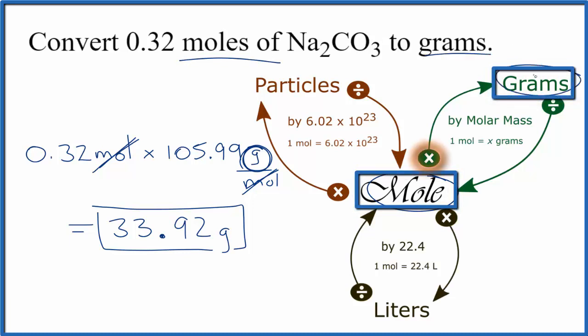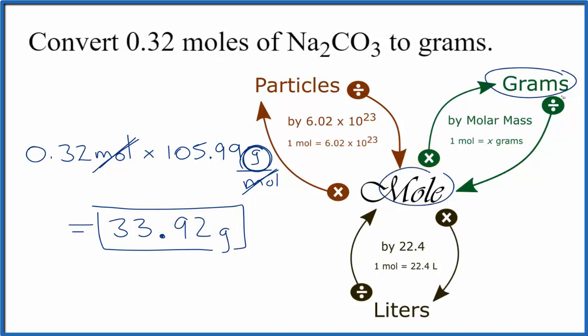and wanted to get to grams, so we multiplied by the molar mass. If we were given grams and asked to find moles, we'd start with grams, and to go to moles we would do the opposite—we divide by the molar mass.